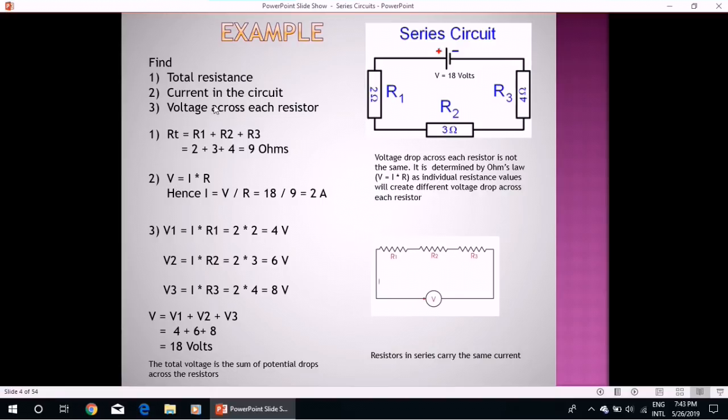Now we have to calculate current in the circuit. As we know that resistors in series carry the same current. So according to Ohm's law again, V equals I into R. So I will be equal to V over R. By substituting the values of voltage and resistance, the current comes out to be 2 amperes.